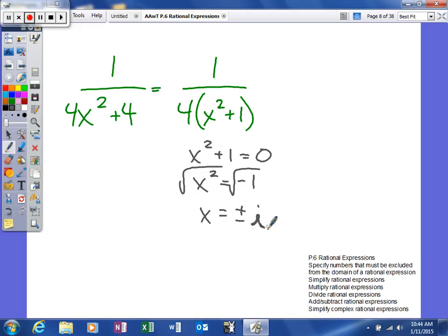So for the excluded values from our domain, we have, in this case, no excluded values. Because the excluded values that we found in this one were imaginary.